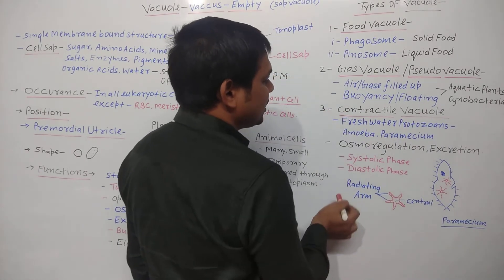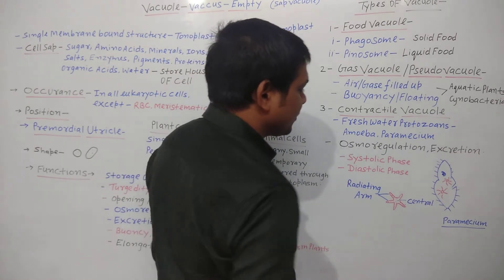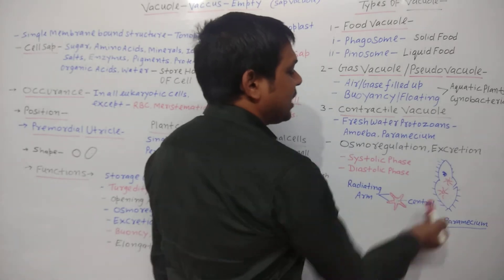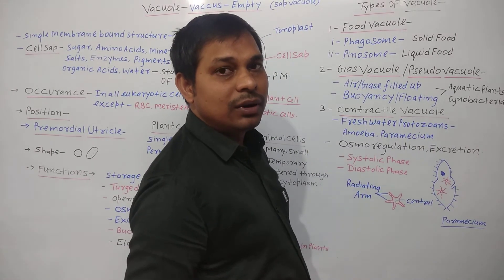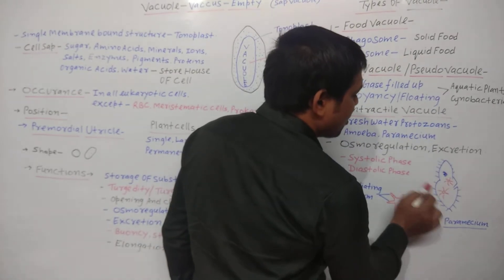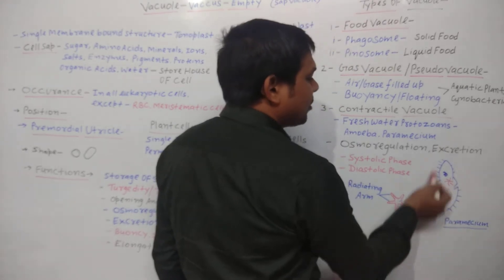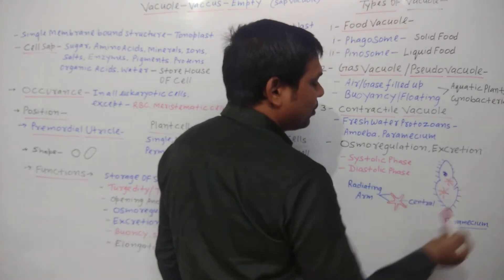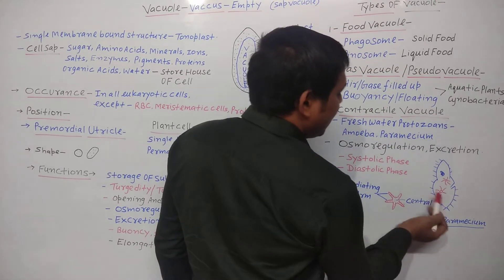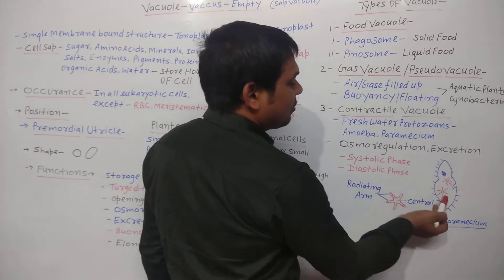Contractile vacuoles exist in two phases: the systolic phase and the diastolic phase. Looking at the diagram of paramecium — also known as the slipper animalcule — on its body surface there are many cilia, which help it float in water and assist in locomotion and movement. Paramecium has two contractile vacuoles.